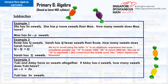Example 3. Yuki and Abby have six n sweets altogether. If Abby has n sweets, how many sweets does Yuki have? Six n minus n equals five n. Yuki has five n sweets.